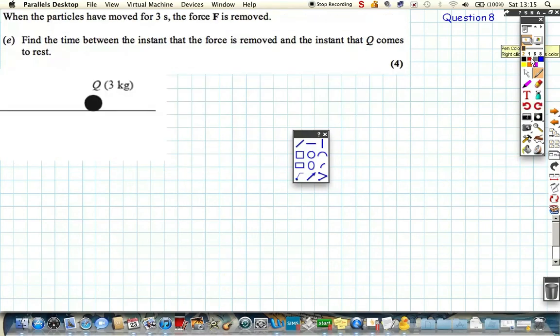If we look at this now, we've now, what's happened is the particles move for three seconds and the force F is removed. So what we can do is, we can assume that now the string is not taut anymore, there's nothing to pull in, Q is not now pulling on P, the string has become loose, and you can just consider P as a particle on its own.